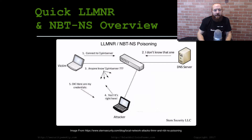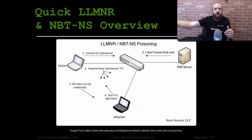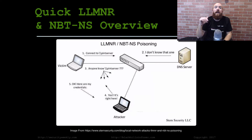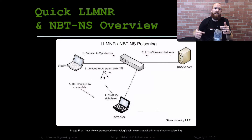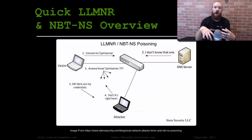Essentially, what happens is whenever your host starts requesting a DNS hostname — so you type in google.com — it's going to start asking your DNS server and then recursively ask the internet where Google is. If it can't find google.com for some reason, the DNS server will come back to your host and say it doesn't have any entry for that. Your local host will then resort to using LLMNR or NBNS, depending on which Windows version you're using, to try to locate that DNS hostname on the local subnet.